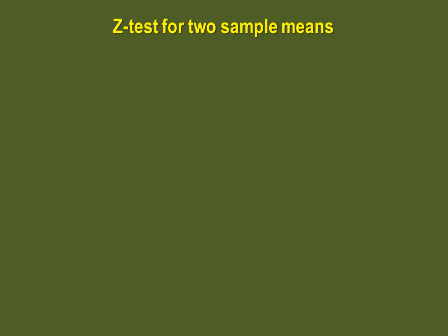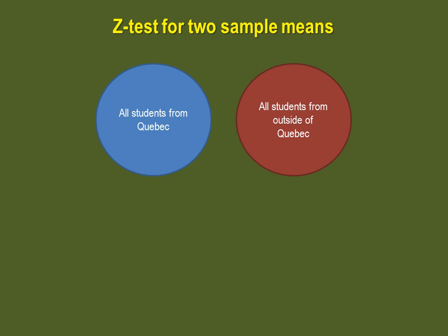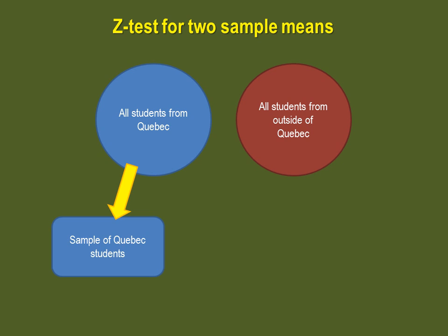Here's a scenario to help clarify what the z-test for two sample means really is. Even though Bishop's University is in the province of Quebec, it harbors students that come from the Quebec system of education as well as students from the rest of Canada and the United States. Suppose you were to take a sample of Bishop's students from Quebec and a sample from outside of Quebec, and you would like to determine if there is a significant difference in age between these two samples. You're not interested in the mean age of a Bishop's student — you're interested in comparing these two samples.